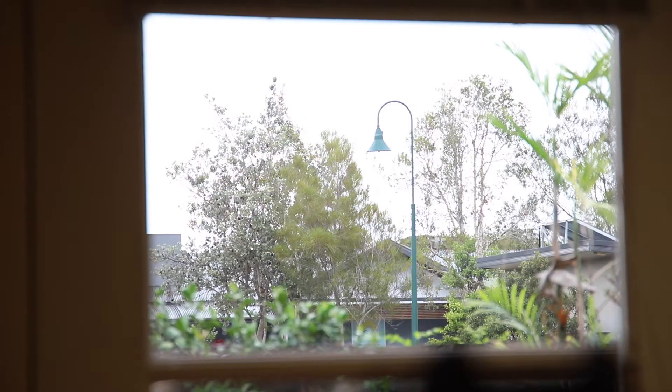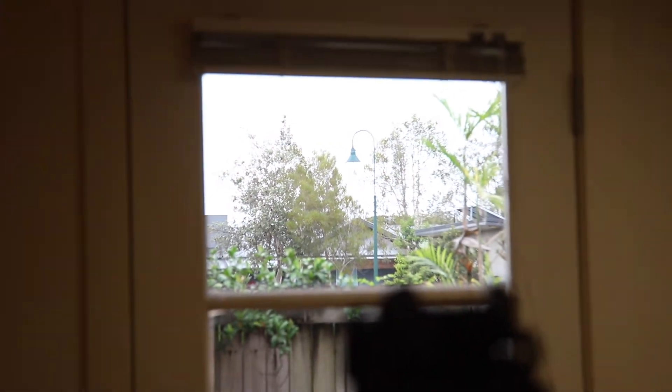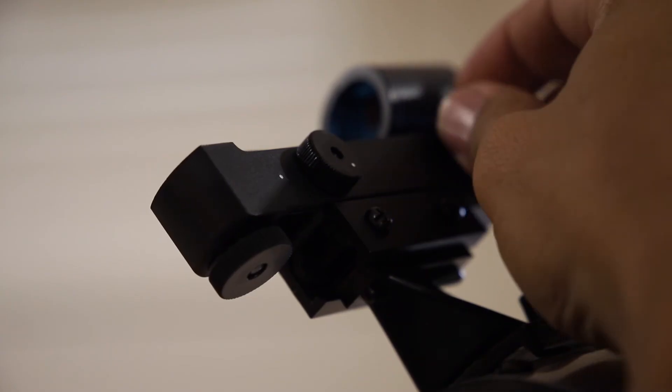This is best done by getting a distant object like a street light in the eyepiece. Turn on the red dot finder and make adjustments with the screws until the red dot is right in the middle just like it is in the eyepiece.